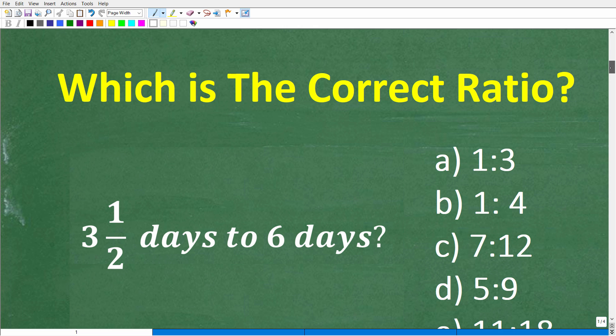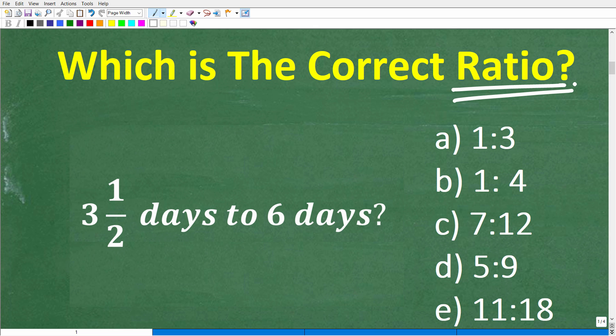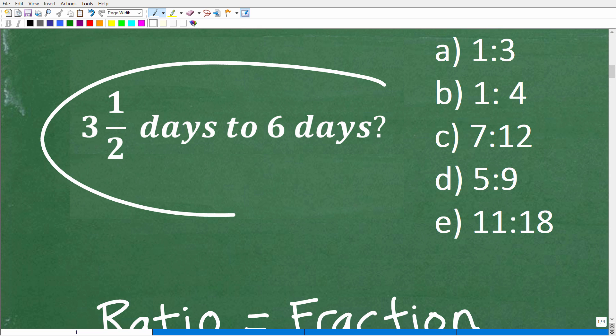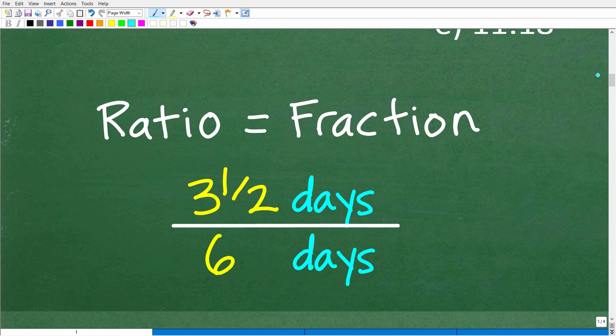Let's go ahead and get into this right now, because ratios is a very important part of basic mathematics. So the question is, which is the correct ratio? Well, we really can't answer the question if we don't really know what a ratio is. So let's go down here and define a ratio right now. A ratio is essentially a fraction. So the question is, what is the correct ratio of this statement? But we can express this statement as a fraction: 3½ days to 6 days.